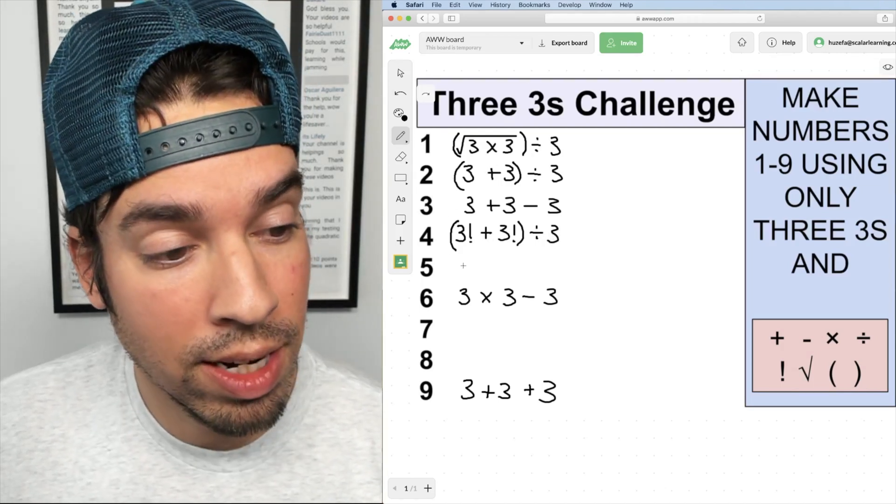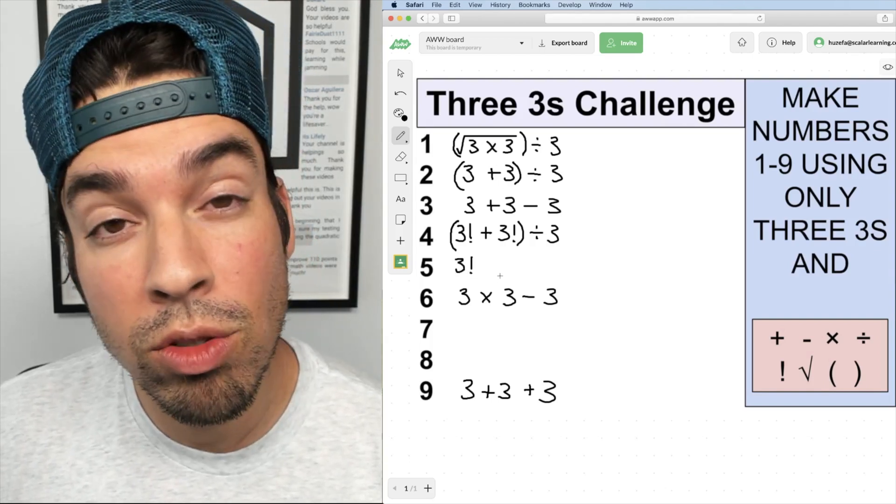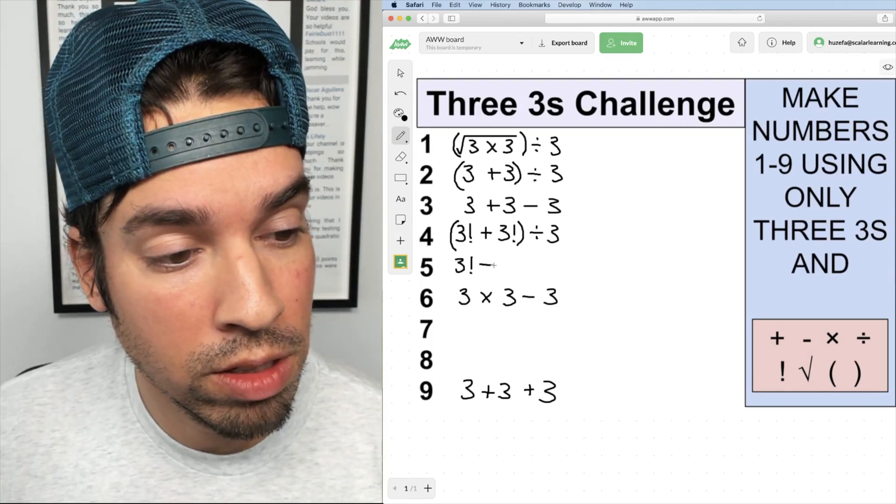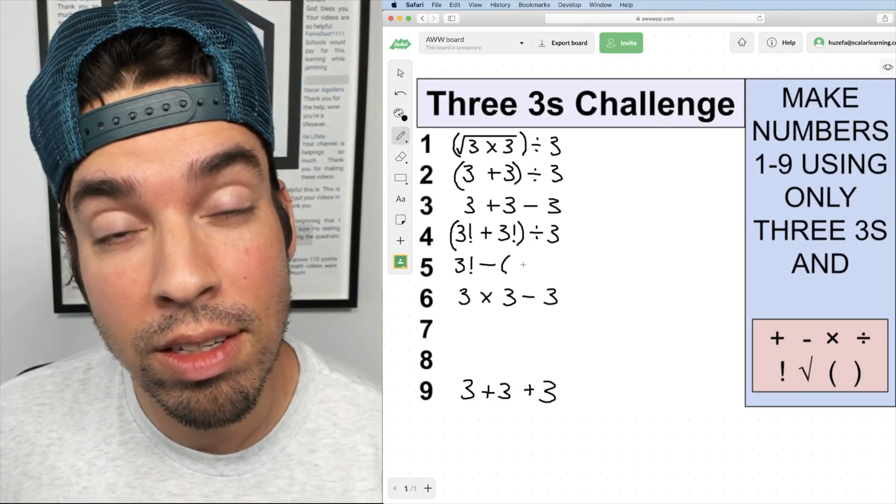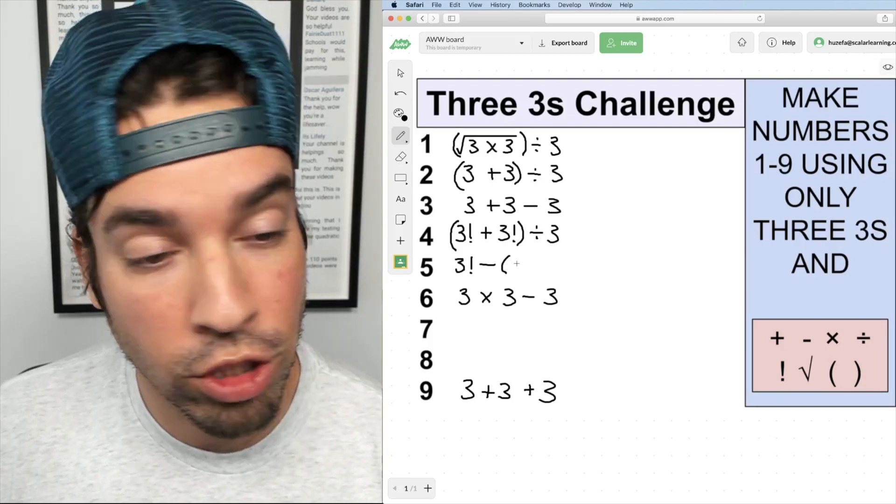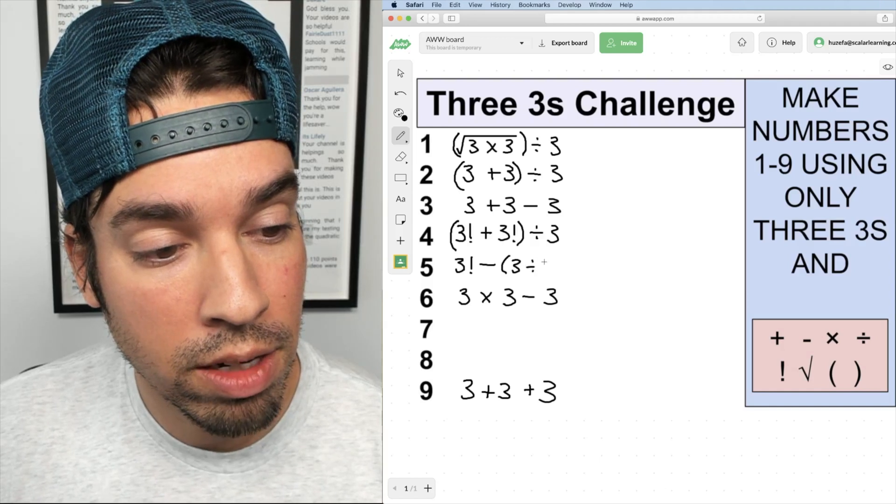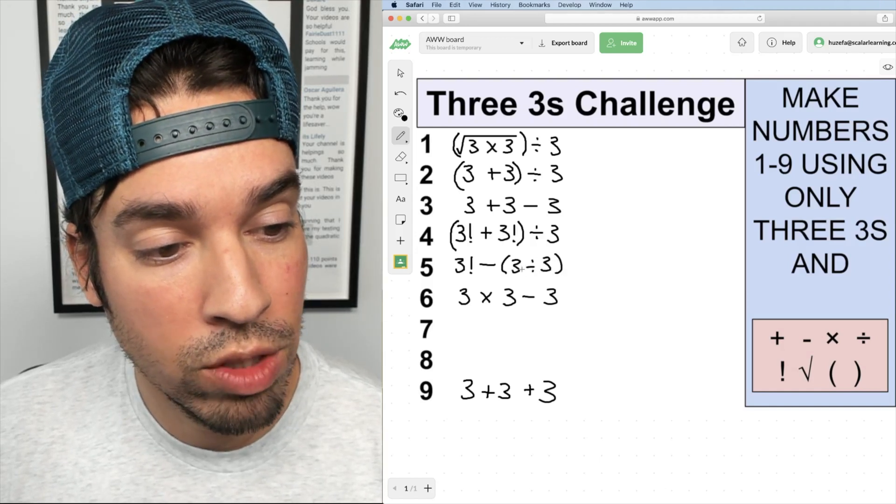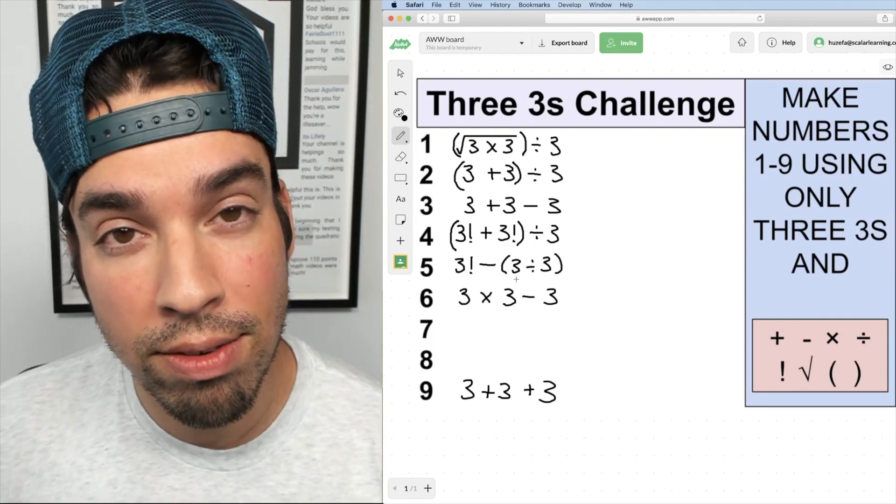Next I'm going to come to five and I'm going to again start with three factorial which is six, and all I need to do is subtract one to get to five. So I'm going to subtract three divided by three in parentheses. Not that I need to put them because order of operations dictates that I do the division first regardless before the subtraction, but I'm going to do it anyways just to make it clear. So that's three divided by three is one and we already know that's six, so six minus one gives us five.